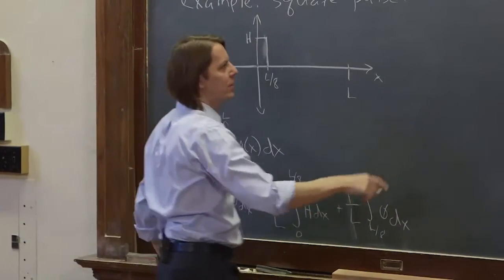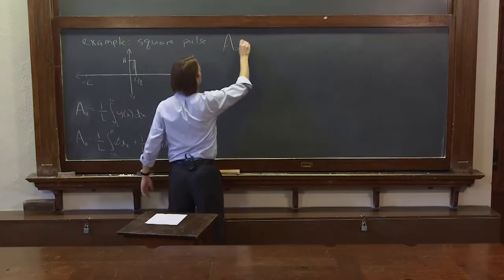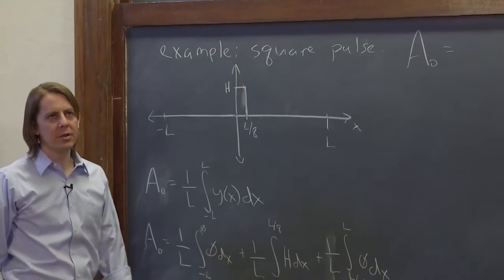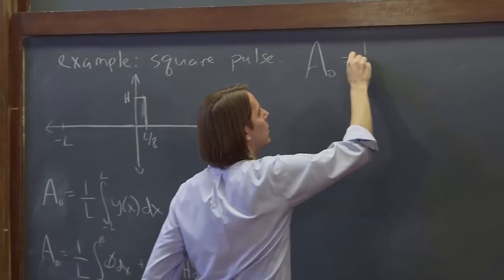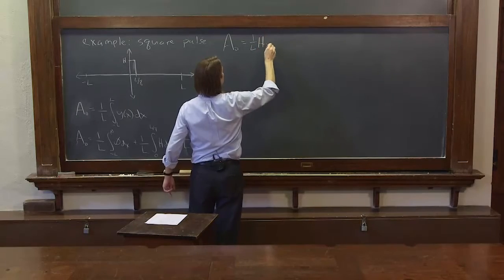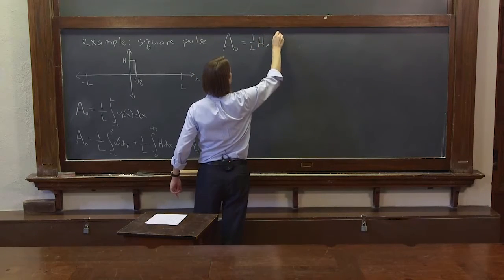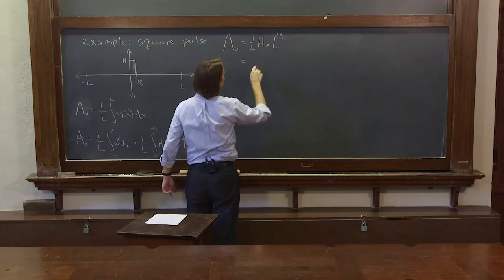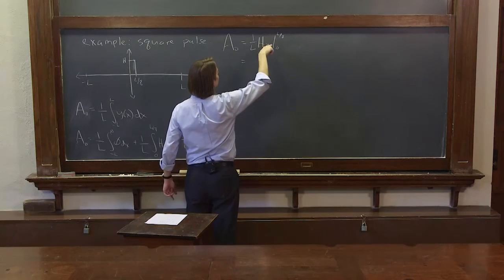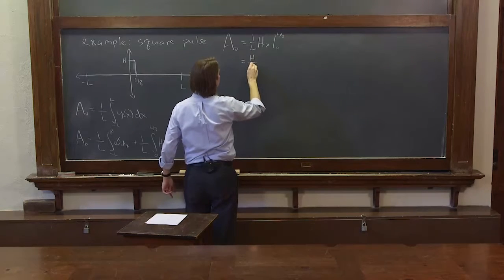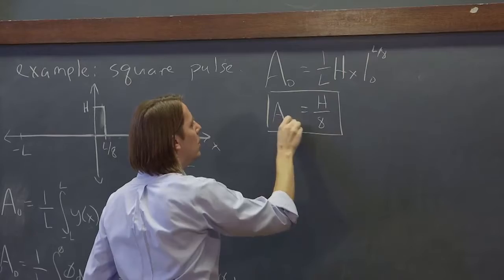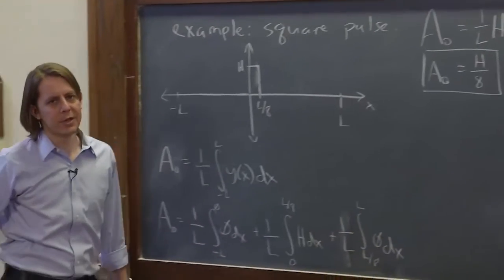These two parts we can ignore. So a0 is going to be the integral of h is hx. So it's 1 over l hx evaluated from 0 to l over 8. So the l's cancel, it is h over 8. So that's the trick, breaking up the integral.